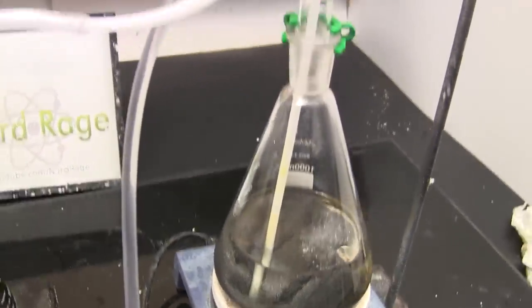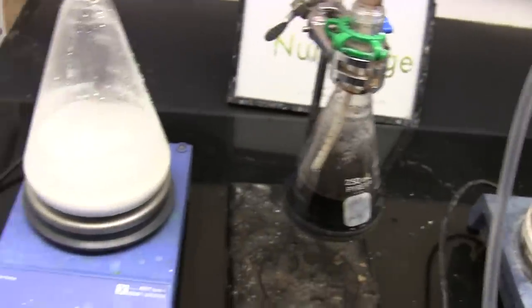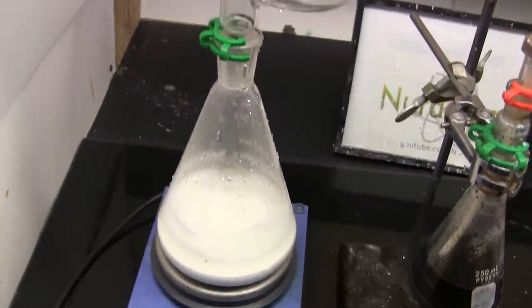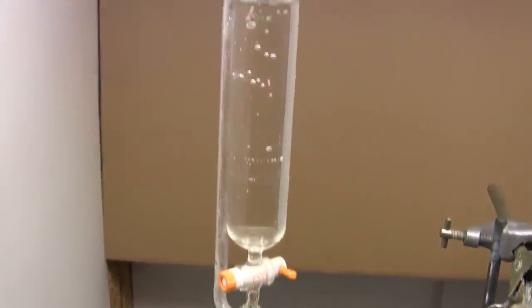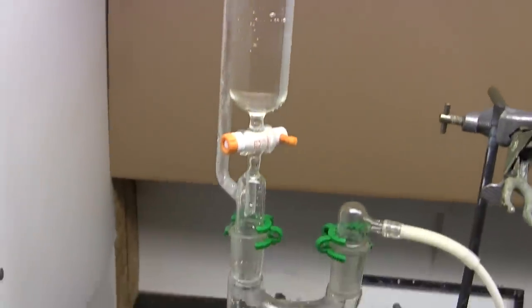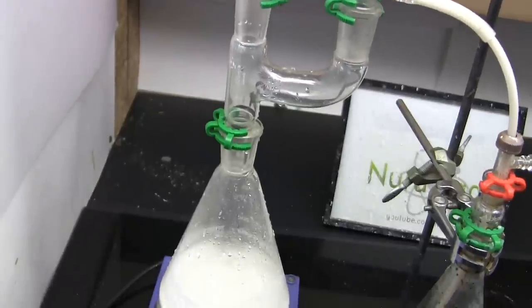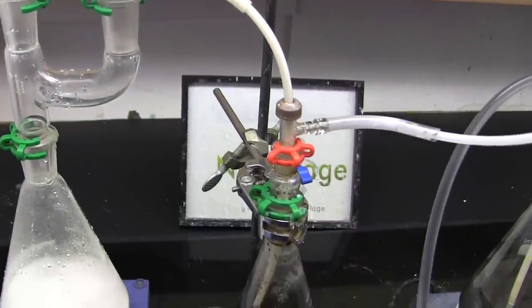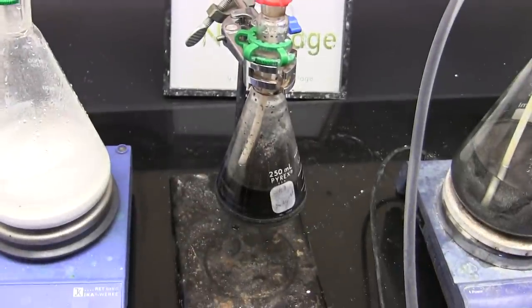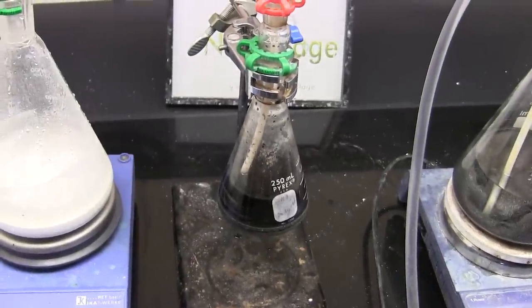Here's our mixture and around it we set up this chlorine generator. I've already detailed how to make chlorine gas in a previous video so I won't get into it here. My setup uses the trichloroisocyanuric acid and hydrochloric acid method. Now the chlorine gas generated is first led through this flask of concentrated sulfuric acid to dry it.